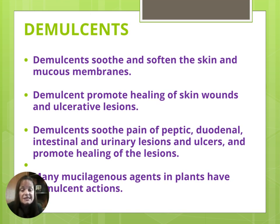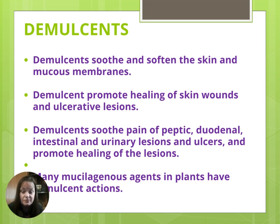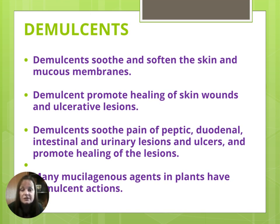Demulcents are those slippery, slimy, soothing components in plants that can be used to soften the skin and heal mucous membranes. Demulcents promote the healing of skin wounds and ulcerative lesions, and are classic for sunburns or kitchen burns. They can also be consumed orally to soothe the pain of peptic ulcers, duodenal ulcers, intestinal or urinary lesions, irritable bowel syndrome, colitis, gastritis, esophageal lesions, GERD, or simply as sore throat lozenges like slippery elm to soothe a sore throat.